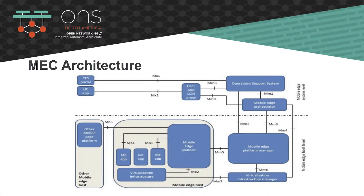A couple of things to look at here: the UE app sits right there, and then there is a user app LCM proxy — LCM being lifecycle management — a proxy that manages the version of the UE app. Here is an important part: you have the complete OSS as well as the Edge orchestration system that plays a very important role in orchestrating the whole system. In the conventional world, the Telco OSS-BSS takes care of infrastructure orchestration — ensuring connectivity, ensuring application related to the Telco infrastructure is up and running, and how to do balancing of equipment.